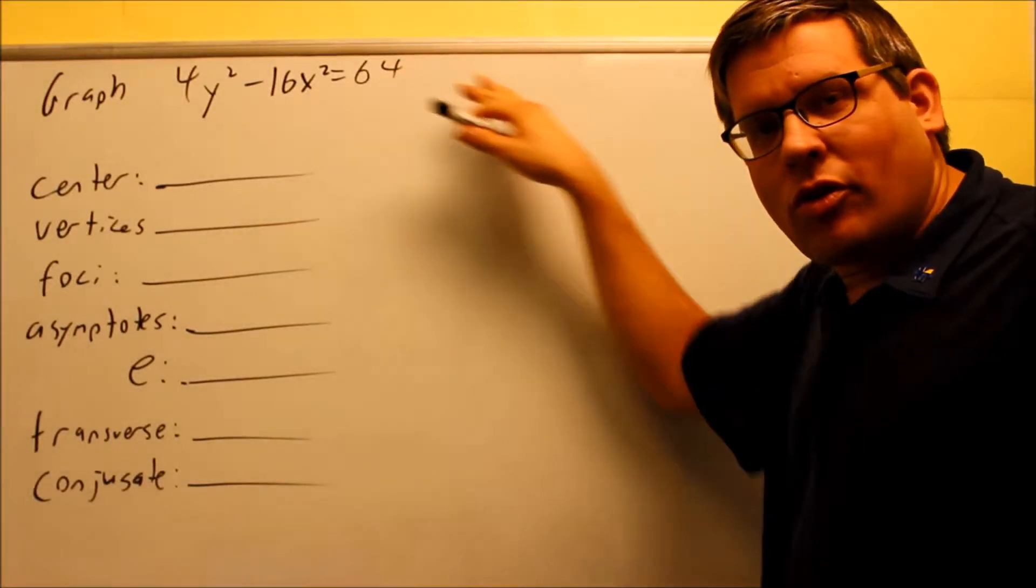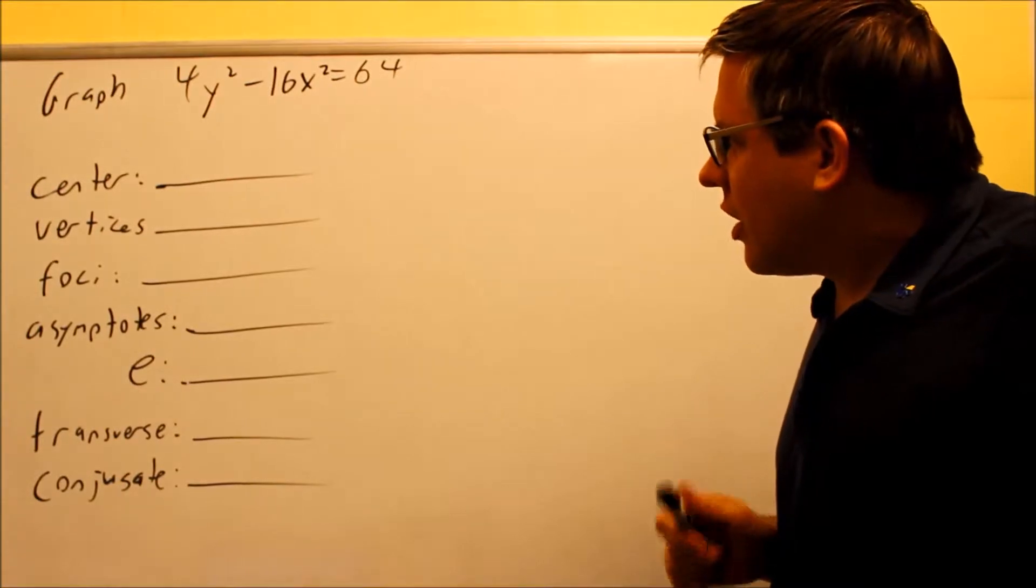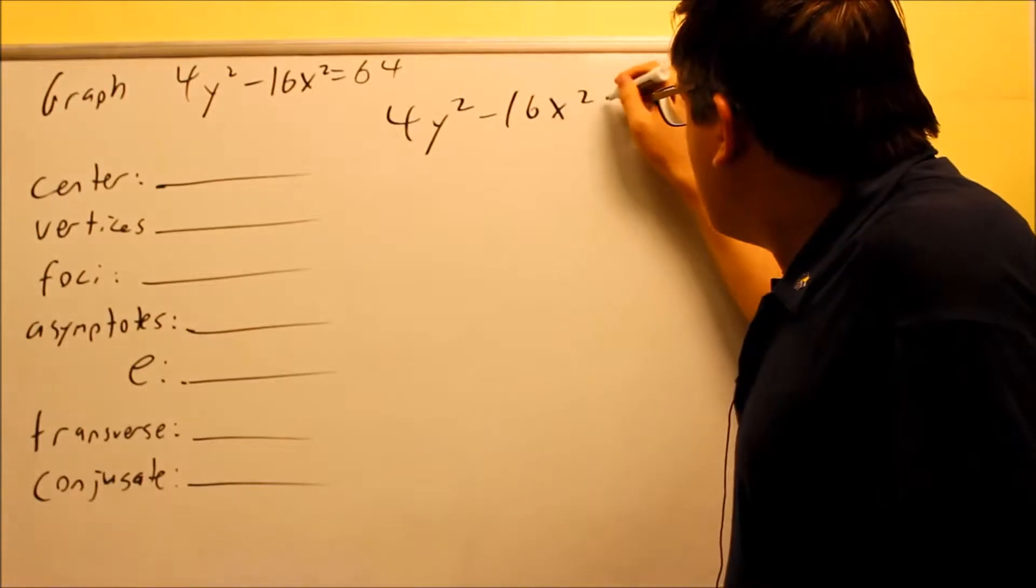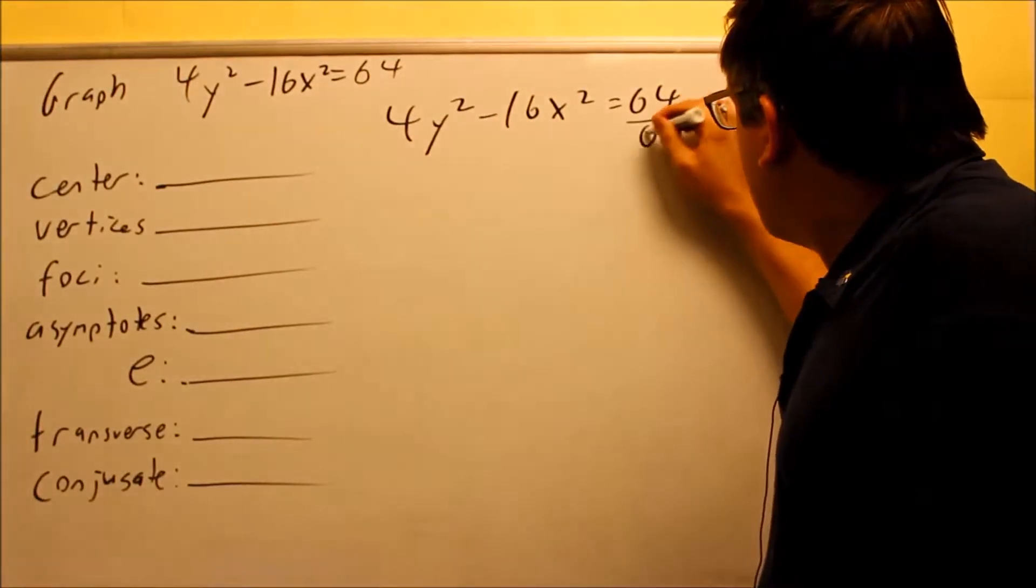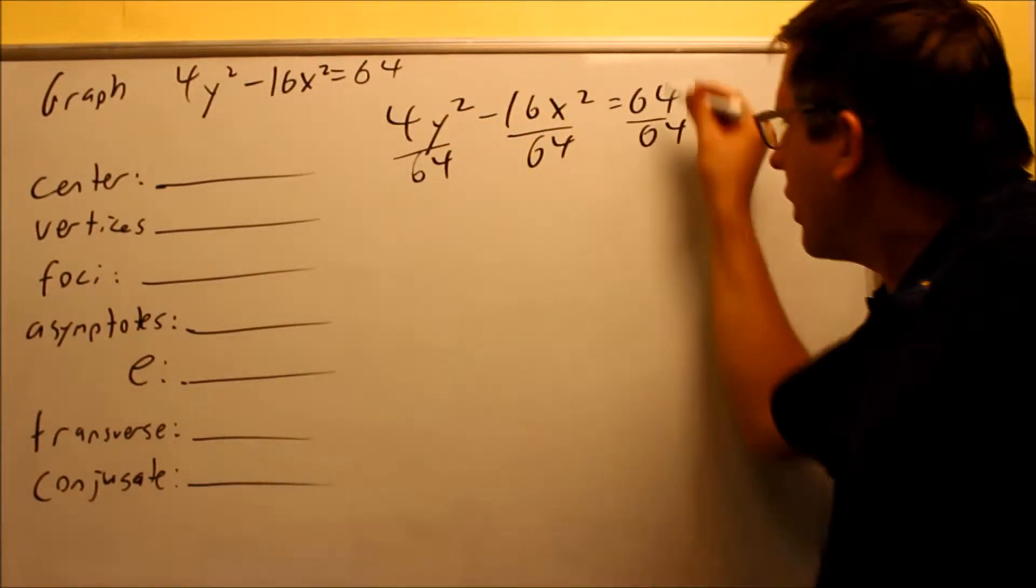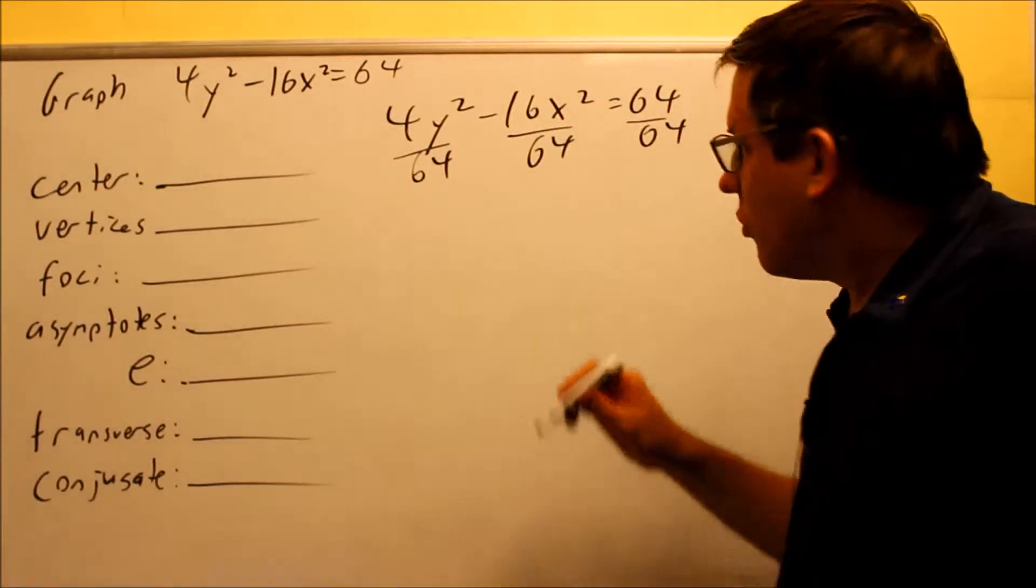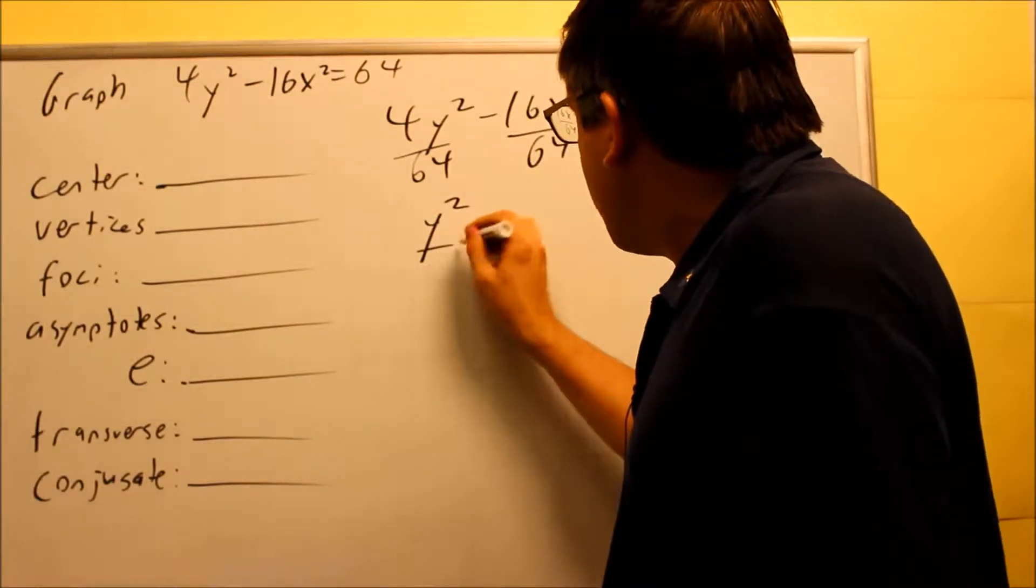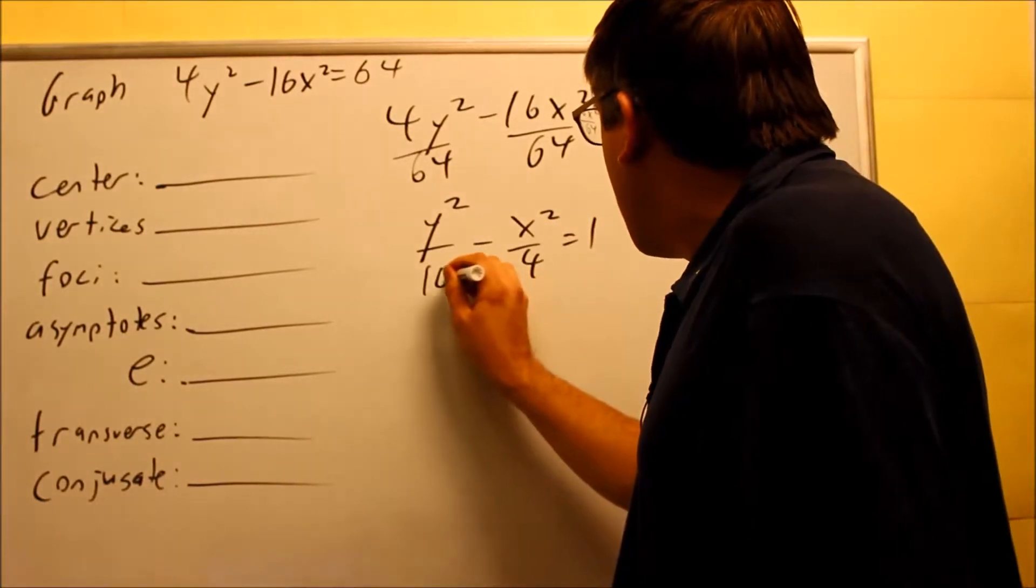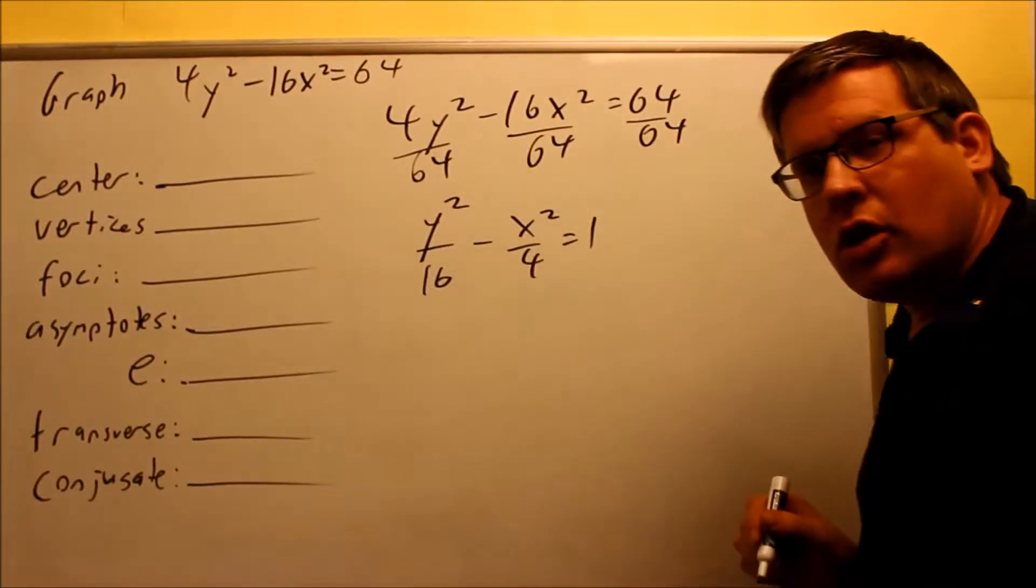For this next one, we don't have it in the proper form because you have to have a 1 after the equal sign. So the first thing you should do is put it into the proper form. I'm going to rewrite this here and divide everything by 64. Again, you want to get a 1 after the equal sign, then we can answer the rest of the questions. So we get y squared over 16 minus x squared over 4, and that equals 1. This here would be the one we're going to be working with.